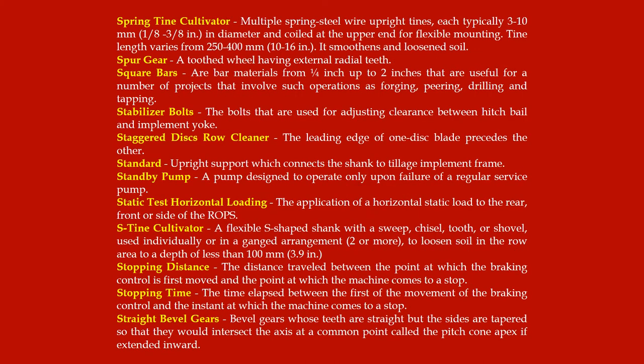Spring tine cultivator: multiple spring steel wire upright tines, each typically 3 to 10 mm (1/8 to 3/8 inch) in diameter and coiled at the upper end for flexible mounting; tine length varies from 250 to 400 mm (10 to 16 inches); it smoothens and loosens soil.